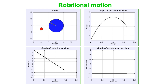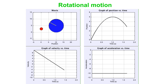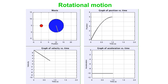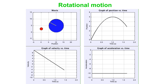The point is that the same graphs fit either motion. If we use position in meters, velocity in meters per second, and acceleration in meters per second squared, it fits the motion of the ball. If instead we use radians, radians per second, and radians per second squared for position, velocity, and acceleration, then the graphs are a perfect fit for the motion of the disc.